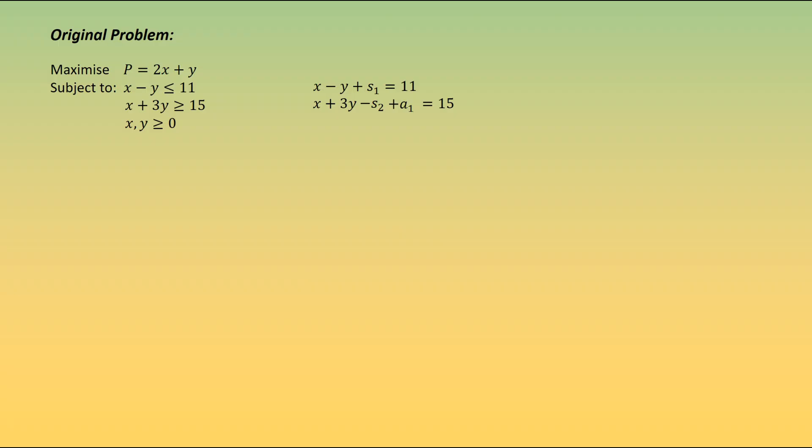So we introduce an artificial variable, a1. This is then the equation that we're going to work with. So for every greater than or equal to constraint that you have, we're always going to subtract a surplus and add an artificial. For the big M method, we need to rearrange this to give us a1 equals, and we would do this with any artificial variables.